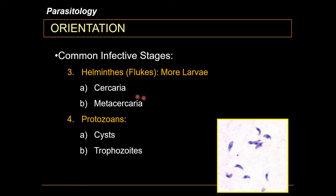Protozoans are totally different from worms or helminths. Protozoans do not have eggs, ova, or larvae — whether rhabditiform, filariform, cercaria, or metacercaria. Protozoans would instead have either cysts, trophozoites, or both as their infective stage.